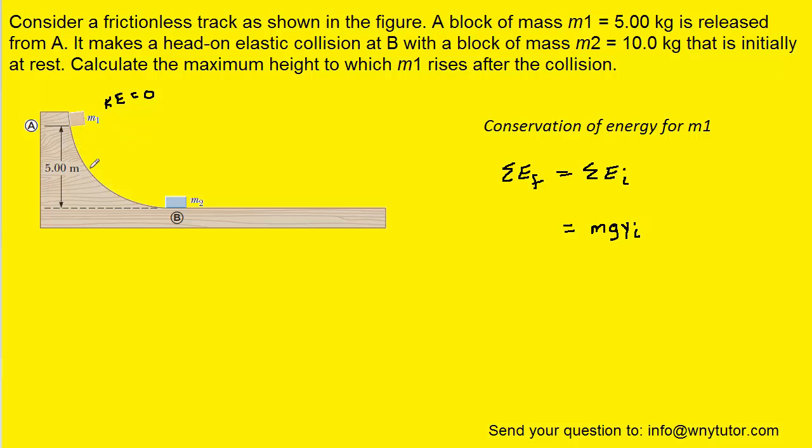The block then slides down the frictionless ramp and ends up right about at point B right before it collides with m2. And when it gets down there, it's back at ground level, and therefore it has no gravitational potential energy. But because it's moving, it would have some kinetic energy.